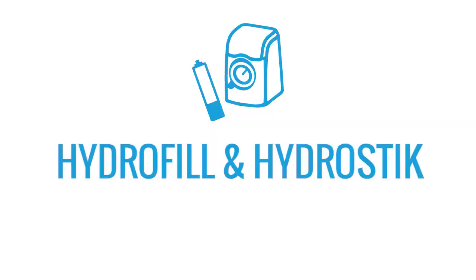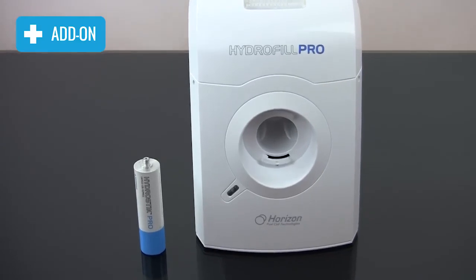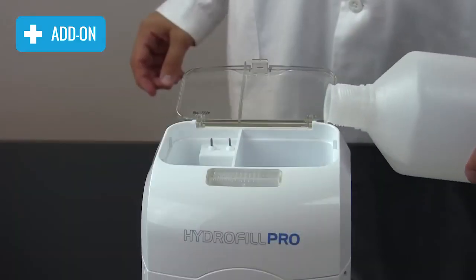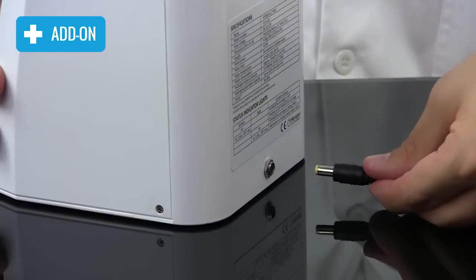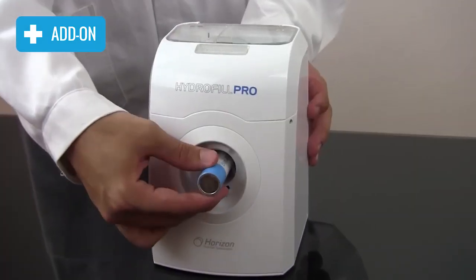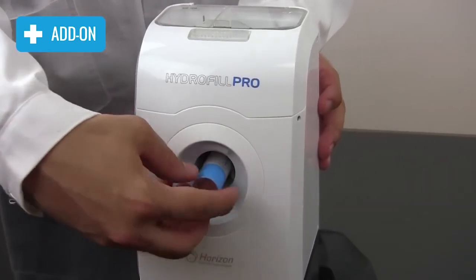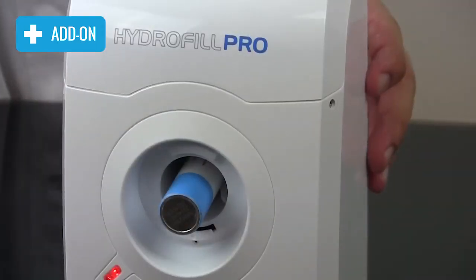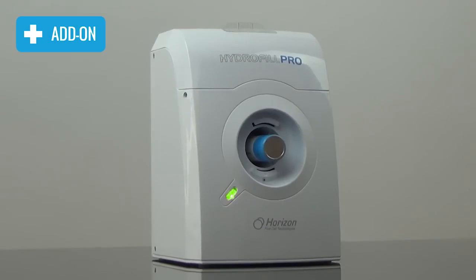If your HydroStick runs out of hydrogen, simply use the HydroFill Pro to refill it. The HydroFill Pro needs only distilled water and an electrical current to make 99% pure hydrogen for your HydroStick. Just twist it into the front of the HydroFill. When the light turns green, the HydroStick is ready to use.